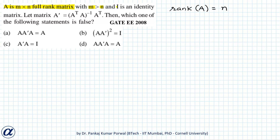We are also given that I is an identity matrix, and we are defining a matrix A dash as A transpose A inverse into A transpose.